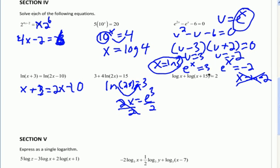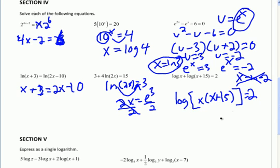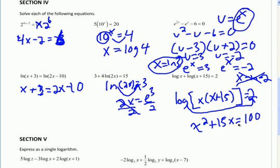On this problem down here, I have multiple logs, so the first thing I want to do is condense. When I have addition, that's going to show up as multiplication inside the log. So I have the log of x times (x plus 15) equals 2. Now I'm going to switch from log form to exponential form — the base is 10, so I get 10 to the second power, which is 100, and I'm going to distribute. Then I'm going to solve this as a quadratic: subtract 100, factor. It's important that you check your answers with log — if plugging back into the original causes a negative or 0 in any of these logs, that's an extraneous solution and you throw it out.